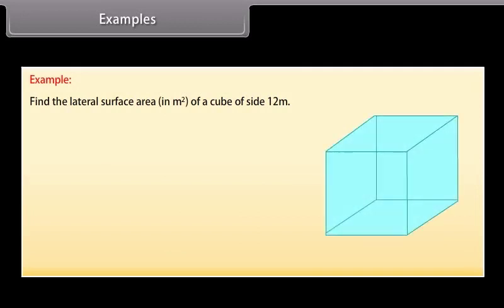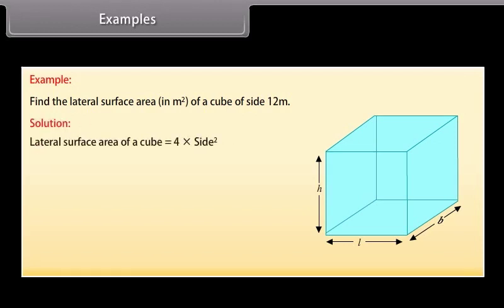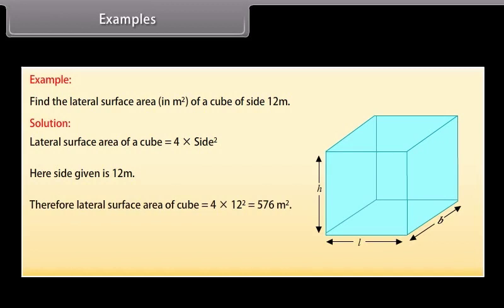Example: Find the lateral surface area in square meters of a cube of side 12 meters. Solution: We know that the lateral surface area of a cube = 4 × side². Here the side given is 12 meters. Therefore, lateral surface area of cube = 4 × 12² = 576 square meters.